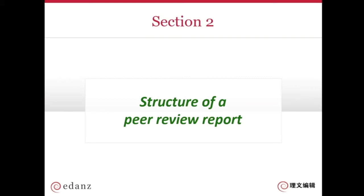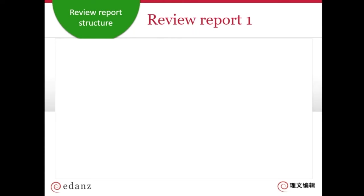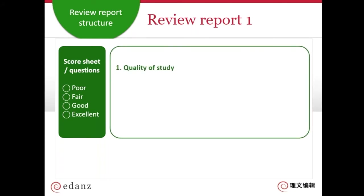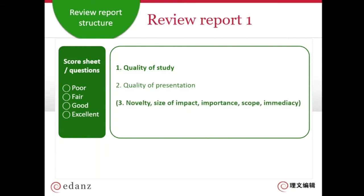Now let's have a look at the actual structure of a peer review report. Different journals have different styles — some have a free-form style where you supply your own essay, but some journals have a very structured score sheet. It could be a scoring system, tick boxes, or a questionnaire, looking at the quality of the study, quality of presentation, novelty, potential size of impact, importance, scope, how urgent the findings are, and the overall recommendation for the editor on whether the paper should be published, sometimes with a ranking system.